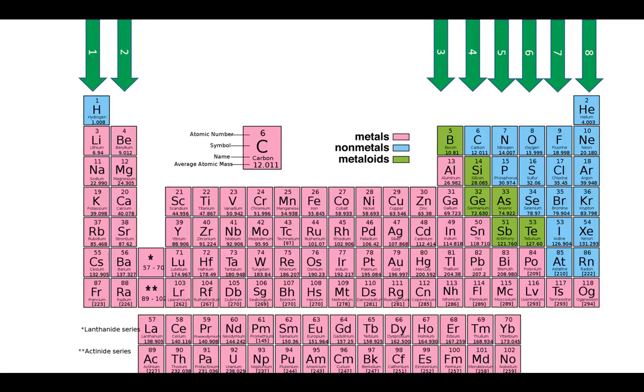And we find those first 20 in these 8 columns. We call columns in the periodic table groups. Now there are different ways of numbering these groups, but for school level chemistry, because we're only interested in these 8, this tends to be maybe the best way.